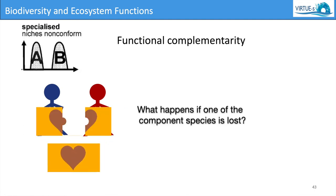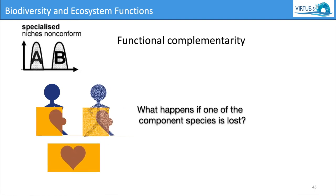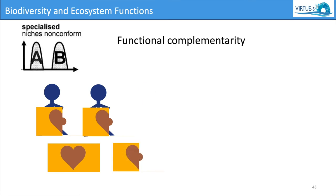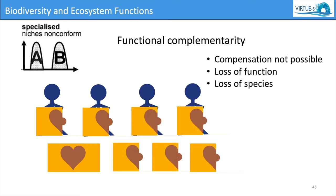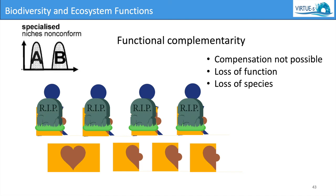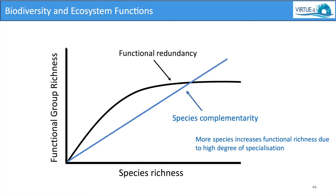What happens if one of the component species is lost? The remaining species may continue to perform its role, but the function cannot be completed. Compensation is not possible and there is a loss of function and species.